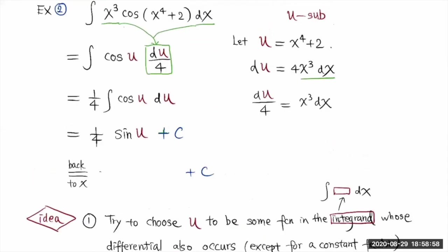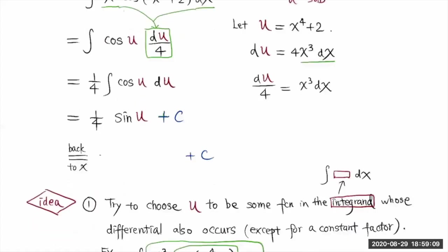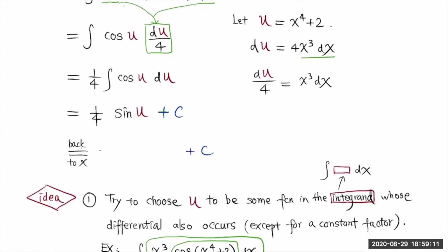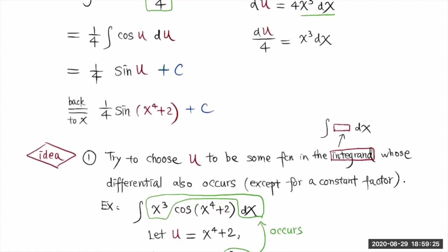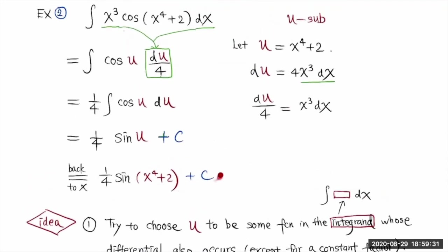Finally, because we started with the integral in terms of x, we want the result to be expressed in terms of x. So we return back to x — the u here is substituted back by x to the 4th power plus 2. You can check this result by differentiating it and seeing if you get back to the original integrand.